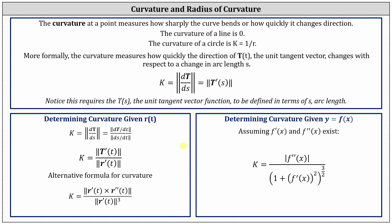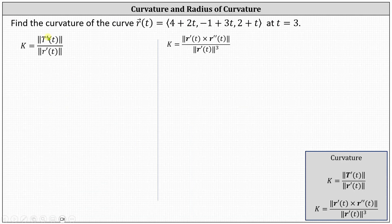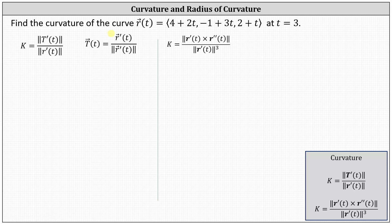Going back to the example, using the curvature formula on the left, before we can determine T prime of t, we need to determine T of t, the unit tangent vector function. Recall the unit tangent vector function T of t is equal to r prime of t divided by the magnitude of r prime of t. This indicates that for the first step, we'll determine r prime of t by differentiating each component of r of t with respect to t. The x component of r prime of t equals the derivative of 4 plus 2t with respect to t, which is 2.